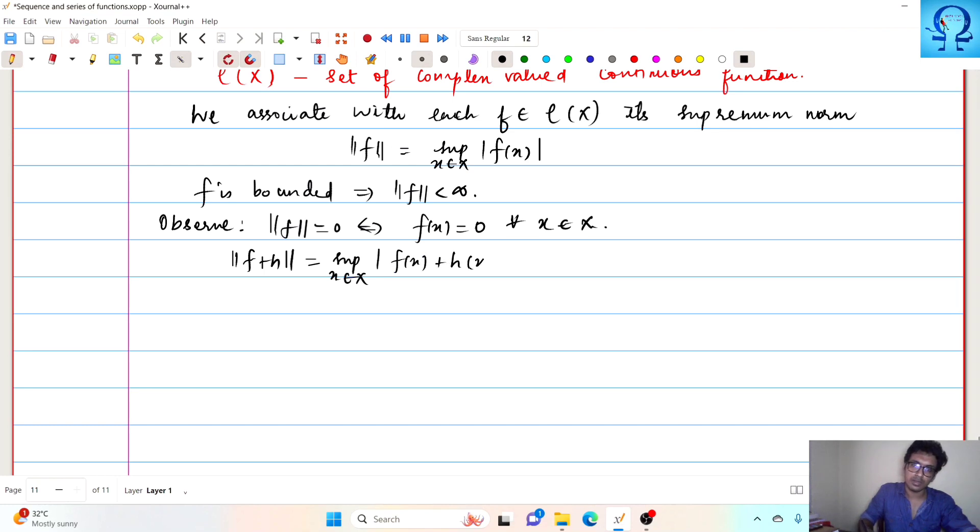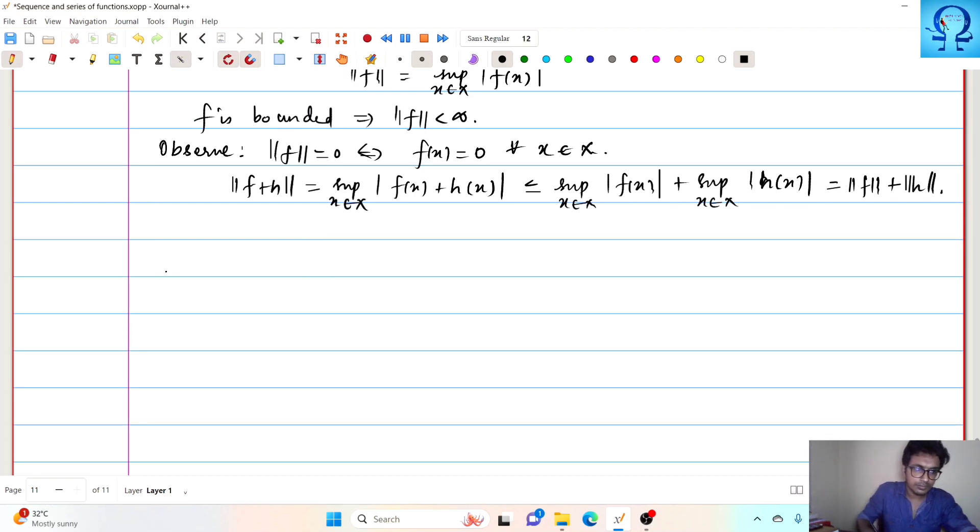This will get split into supremum over x in X of f of x plus supremum over x in X of g of x, so this is nothing but norm f plus norm g. So we were able to observe that we can define a distance between f and g in C of X to be norm of f minus g. These two conditions are more than enough to verify the remaining properties to be a metric.